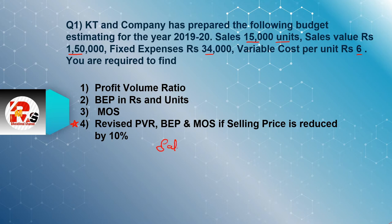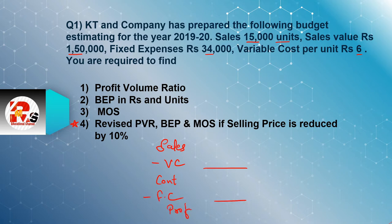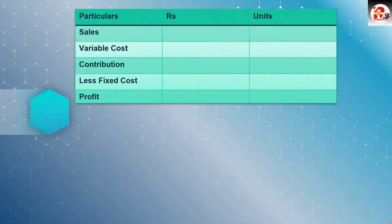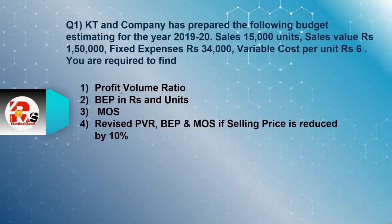The first point is you need to write the format. The format is: Sales minus Variable Cost equals Contribution. Contribution minus Fixed Cost equals Profit. This is a very important format. If you are clear with this format, questions will become very easy to solve. So we need to do the formatting. Here: Sales minus Variable Cost gives Contribution, and Contribution minus Fixed Cost gives Profit.